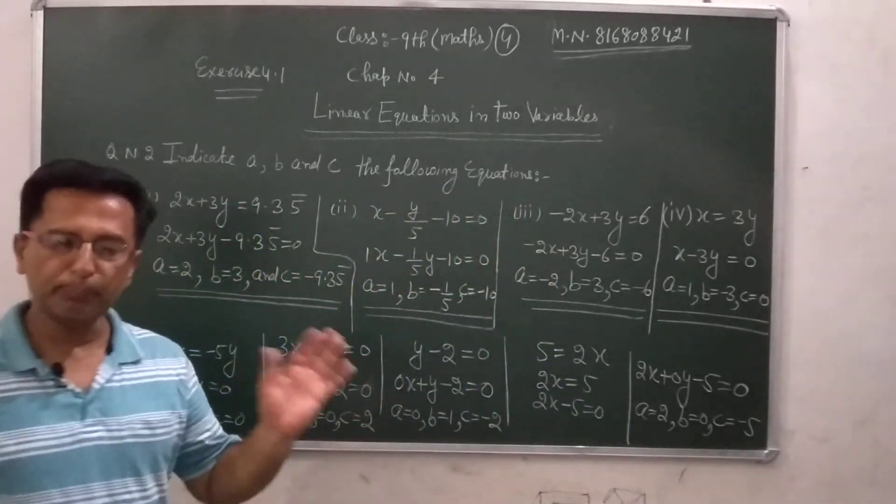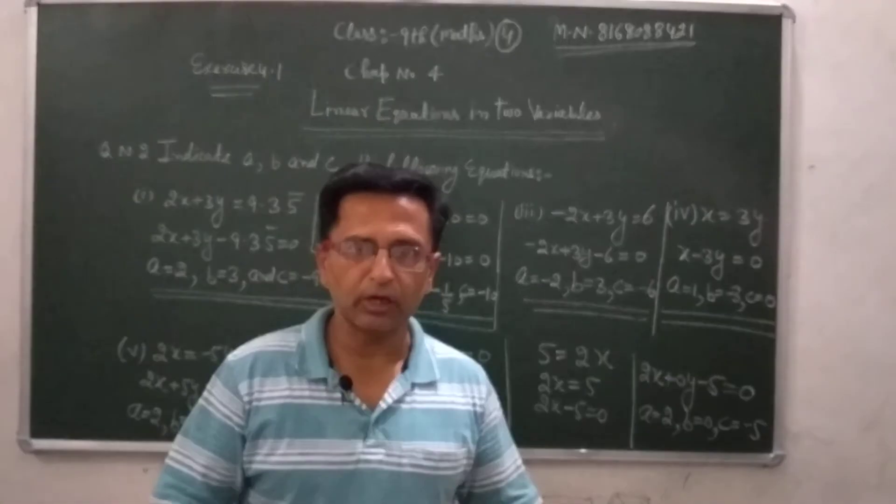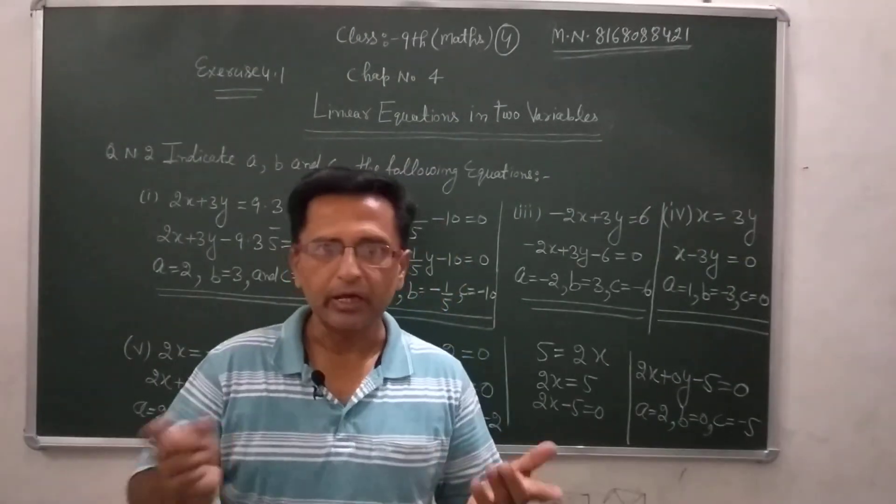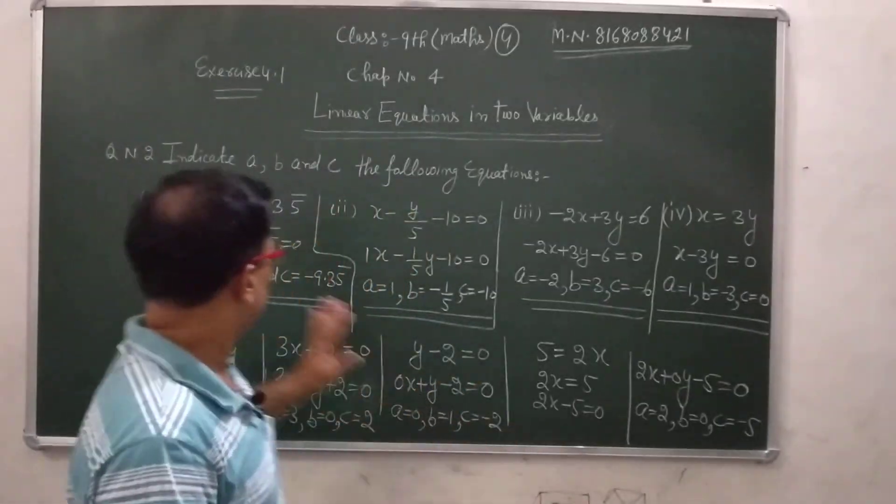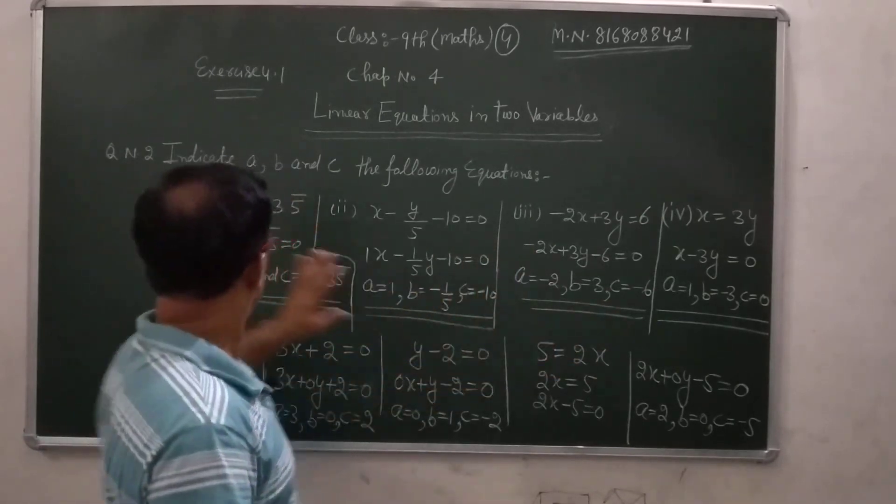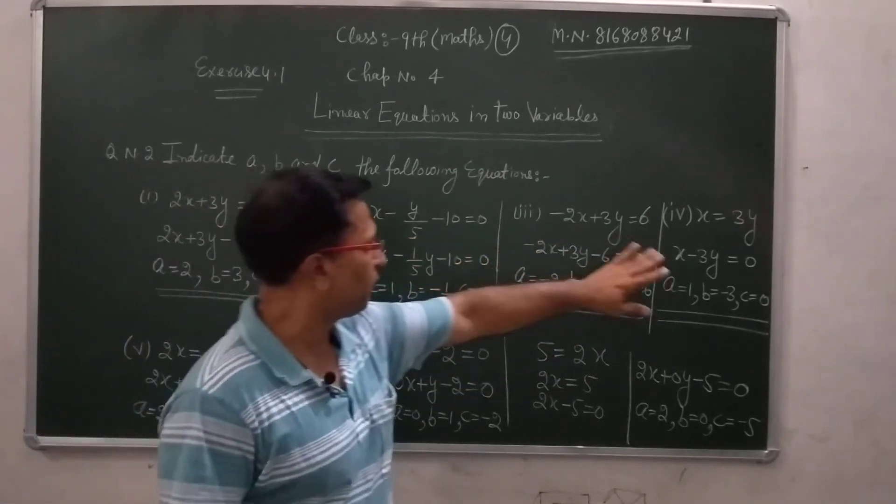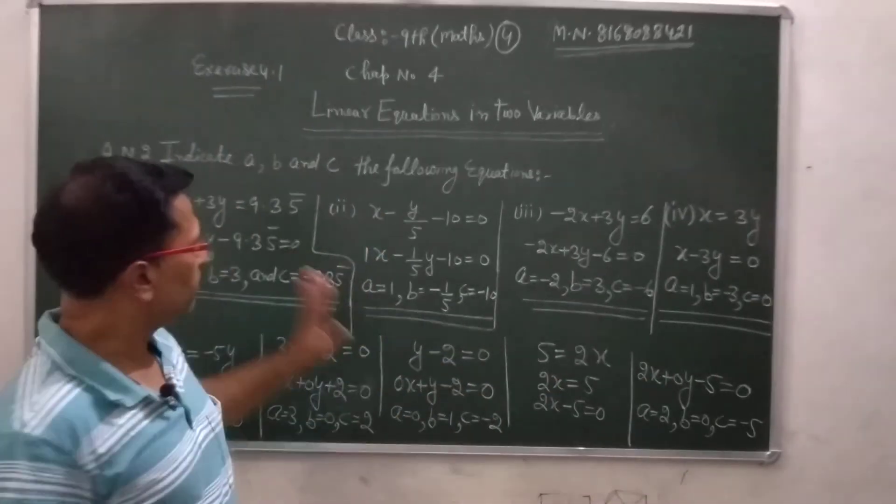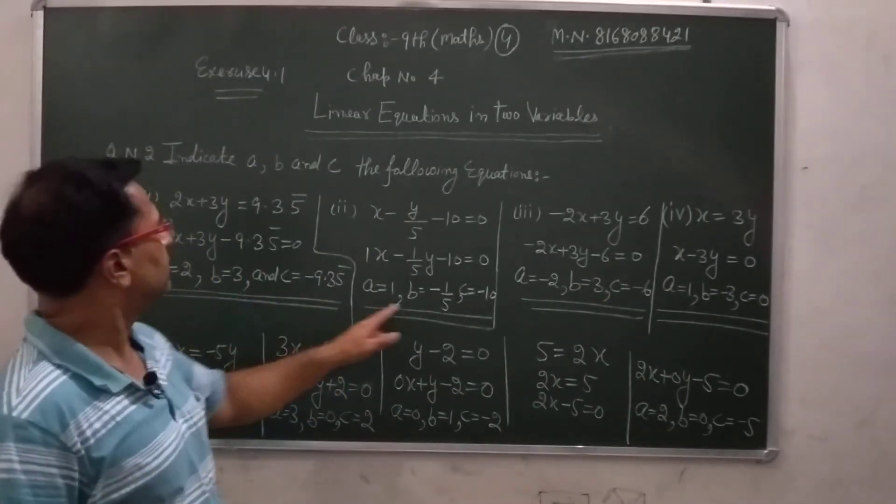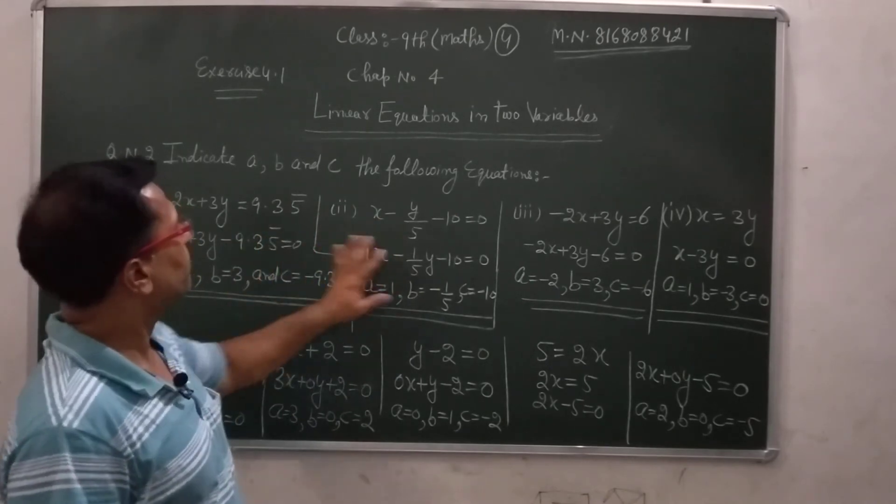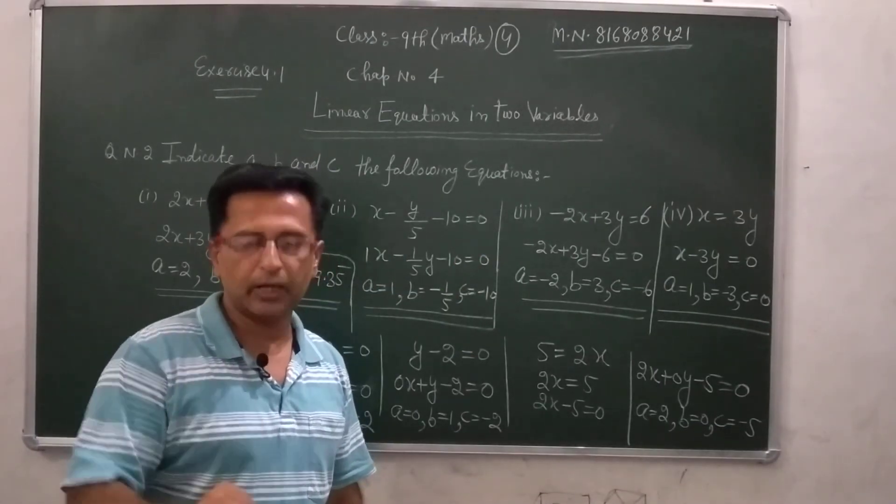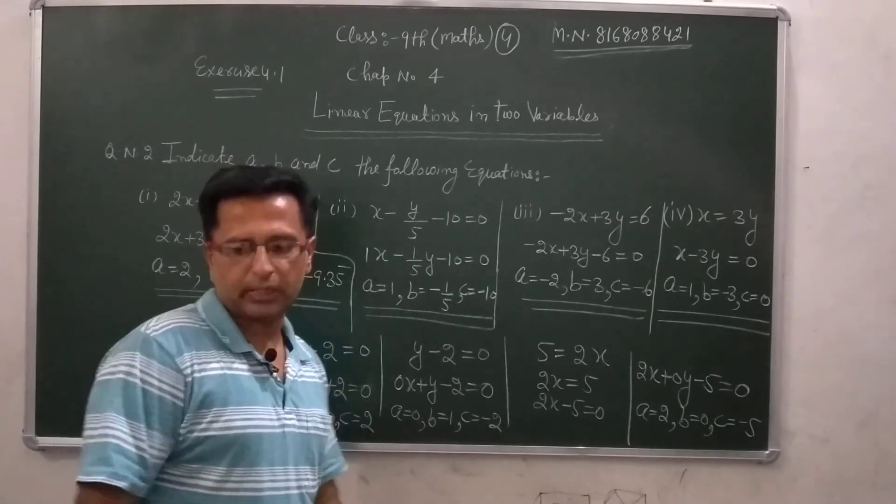In all parts, we indicate the coefficient of x and y and constant A, B, and C in all these parts: 1st, 2nd, 3rd, 4th, 5th, 6th, 7th, 8th, 9th. These all parts we have indicated A, B, C. It is important. Please concentrate in all parts and try again and again. Okay, thanks.